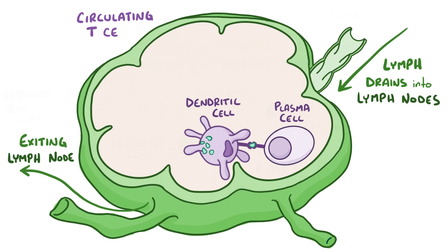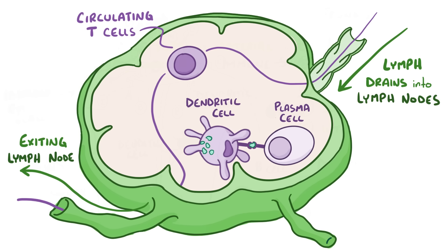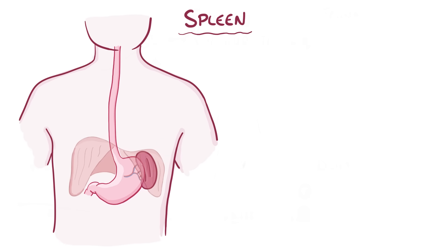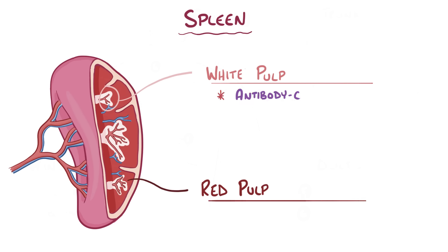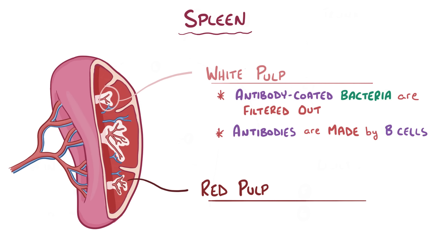There are also circulating T cells, which are another type of lymphocyte that move between the lymph nodes, lymph, and blood, on the lookout for pathogens and infected or abnormal cells that have been tagged by antibodies. Another lymphoid organ is the spleen, which is about the size of a fist and sits on the left side of the body below the diaphragm and on top of the stomach. The spleen has both white pulp and red pulp. The white pulp is where antibody-coated bacteria are filtered out of the circulation and antibodies are generated by B cells — in a sense, the white pulp of the spleen is like a giant lymph node, although unlike a lymph node it receives blood rather than unfiltered lymphatic fluid.